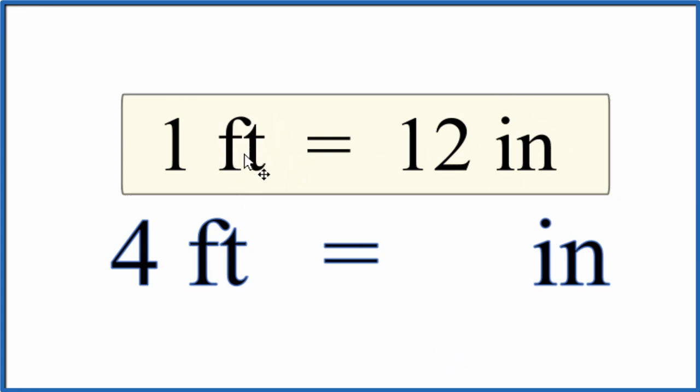So for every 1 foot we'll have 12 inches. If we have 4 feet, that's just 4 times 12. 4 times 12 is 48. So 4 feet equals 48 inches.